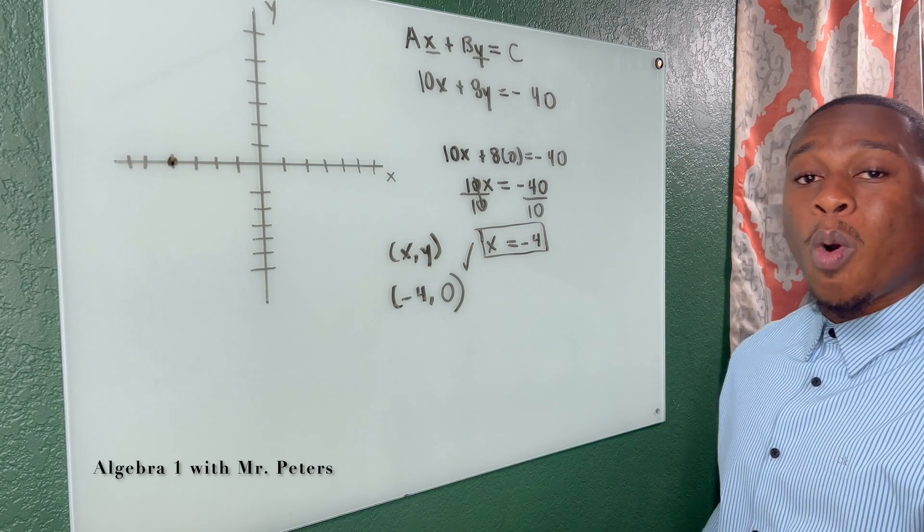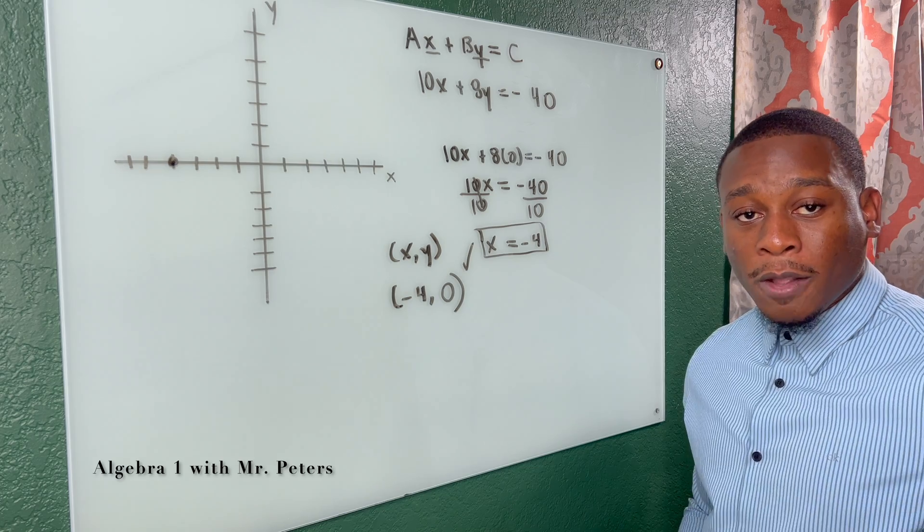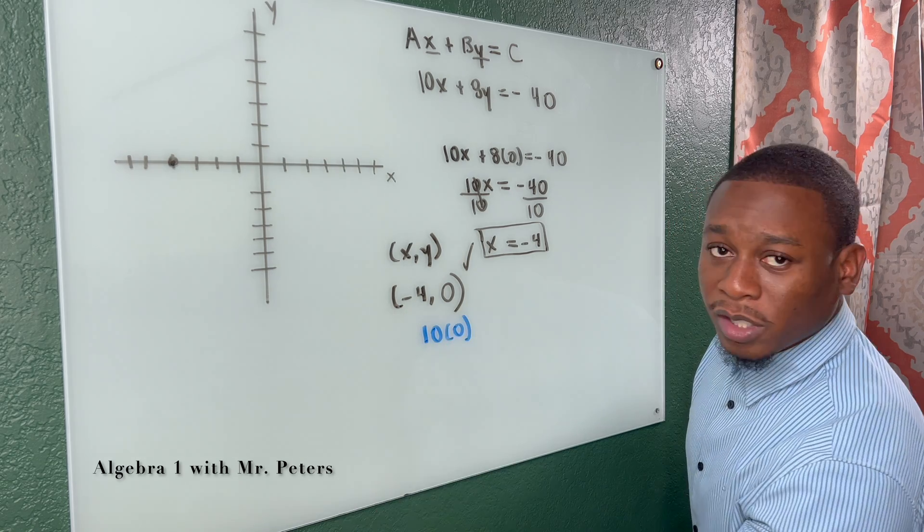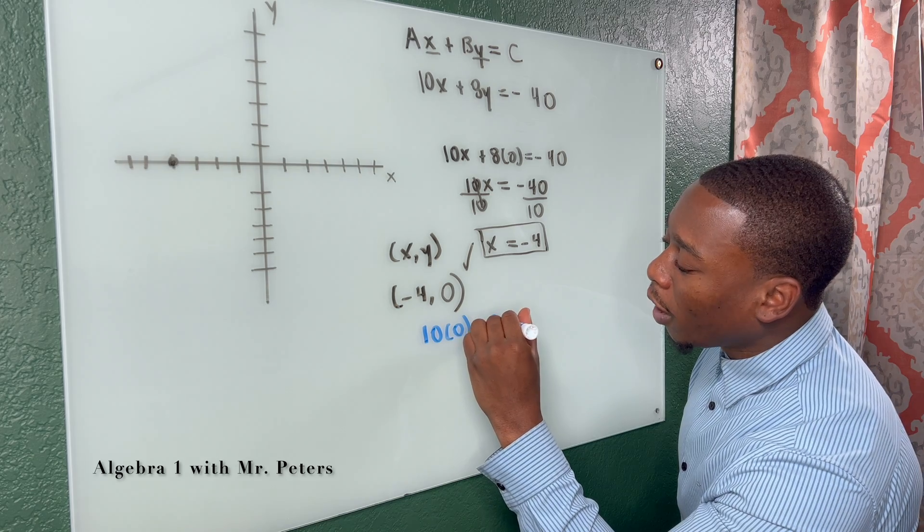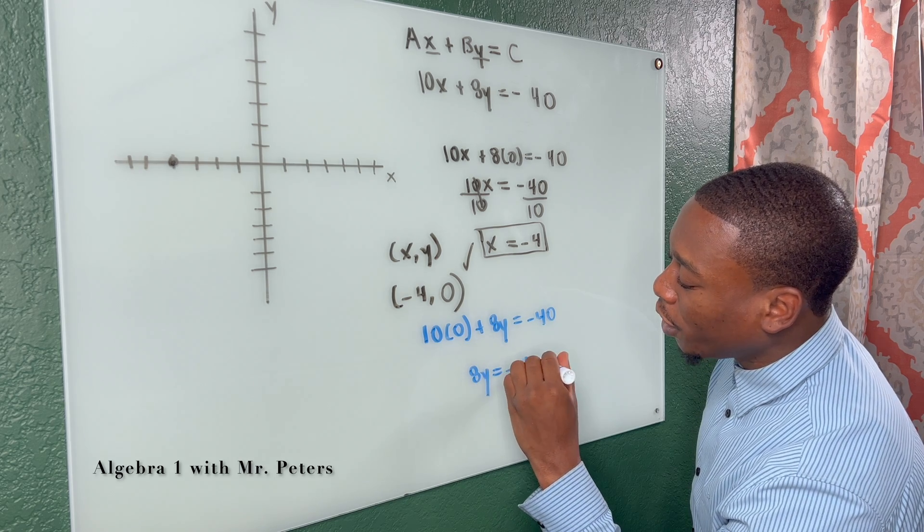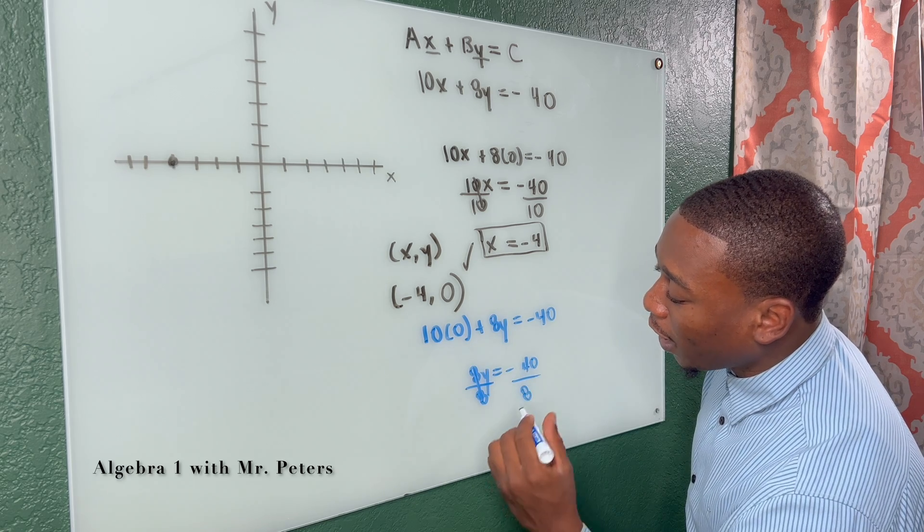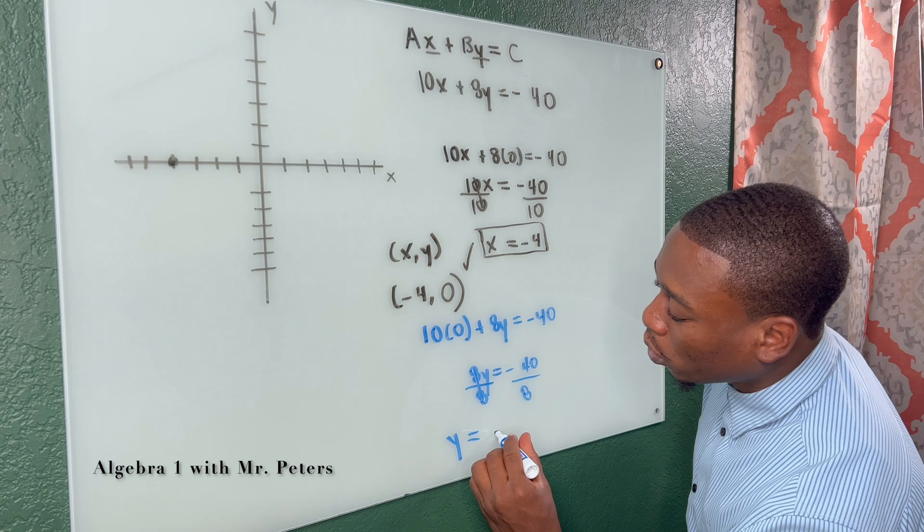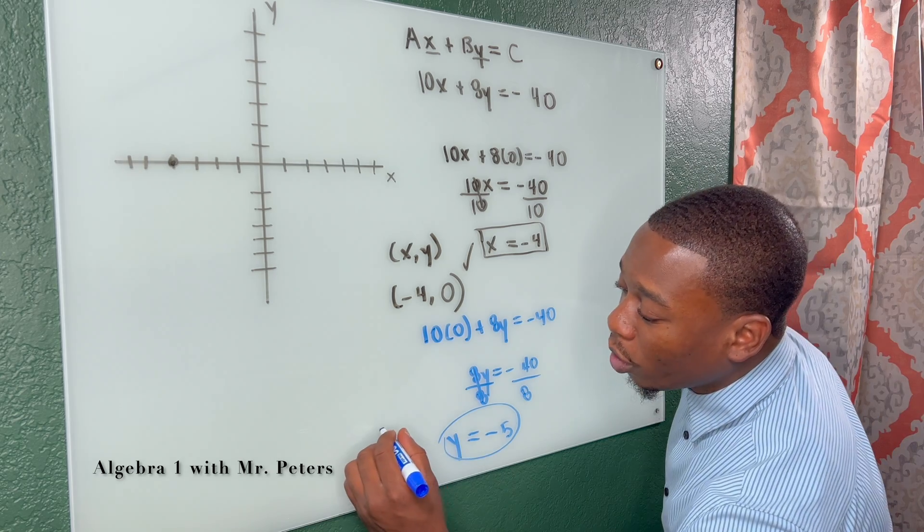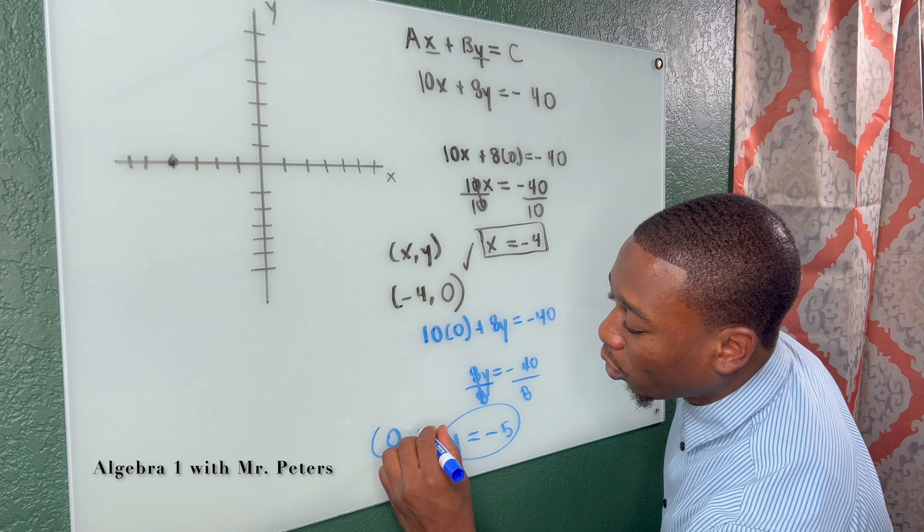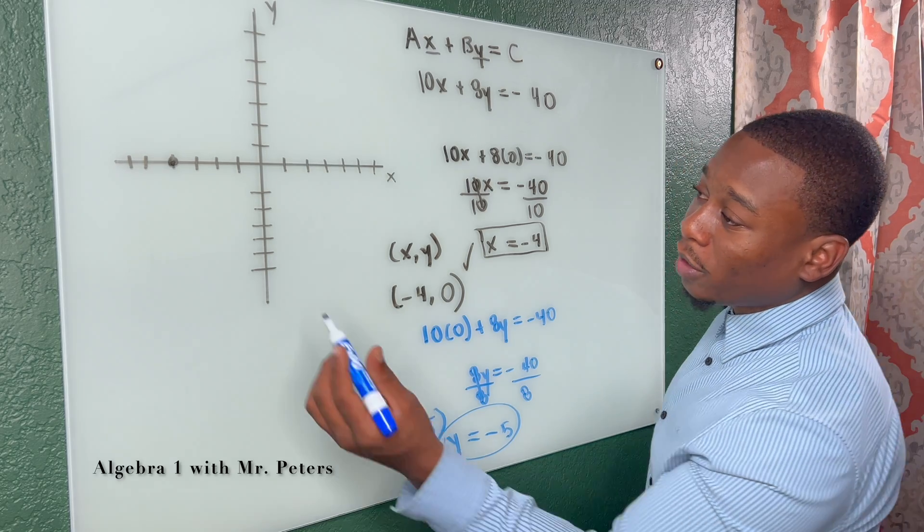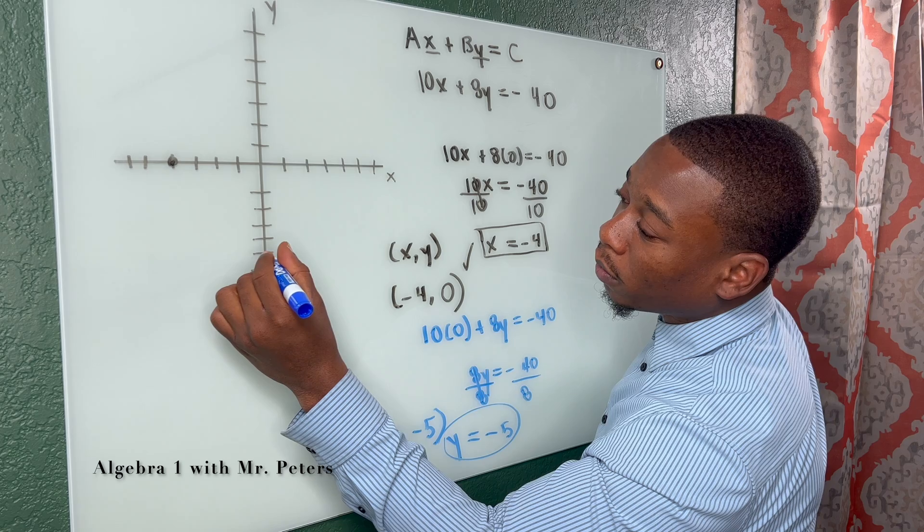Now we go back and we have to find out the Y intercept. Where does this line touch that Y axis? So we do the same thing, but we reverse it now. So now X is going to become zero. I substitute zero for X and rewrite the rest of the equation. Now we have 8Y is equal to negative 40. And when I divide both sides of this equation by 8, Y is equal to negative 5.